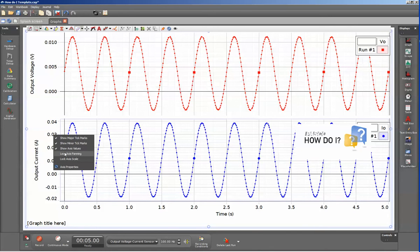Again I'll right click, go down to lock axis panning, and again right click and go down to lock axis scale.